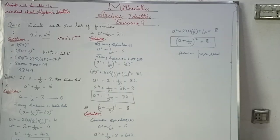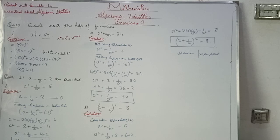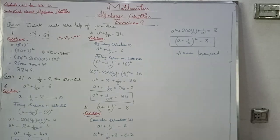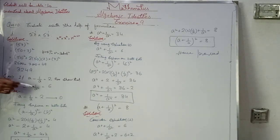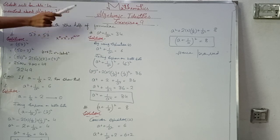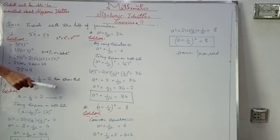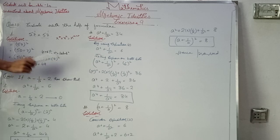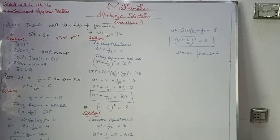Then question number 11: if a minus 1 by a is equal to 2, then show that: first, a² + 1/a² = 6; second, a to the power 4 plus 1 by a to the power 4 equals 34; and third, (a + 1/a)² equals 8.